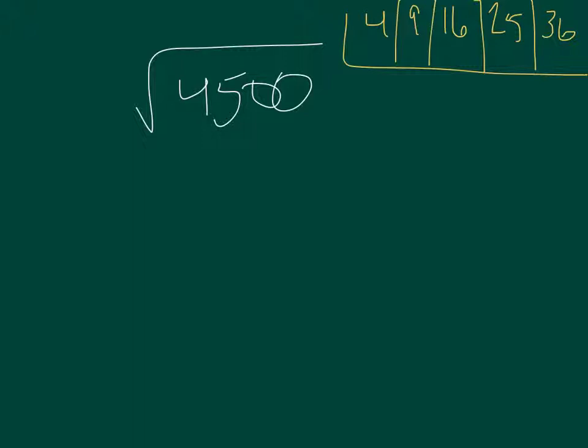What's the square root of nine? Three. What's the square root of sixteen? Four. Square root of twenty-five is five, and the square root of thirty-six is six. We know that these are perfect squares, which means when we get the square root of them, it's going to be a whole number, straight up whole number, clean as a whistle.